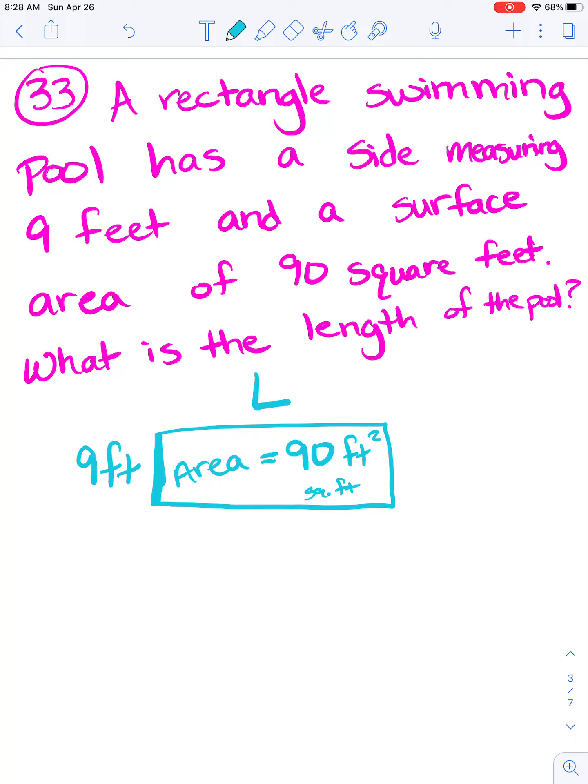Well let's do area song. Area is the total space, total space, total space. Area is the total space the shape occupies. Multiply the length times width, length times width, length times width. Multiply the length times width to find the area. So I would take my length times my width to get my area. Well I already have my area. So I'm going to do 9 times L for my length equals 90 feet squared.